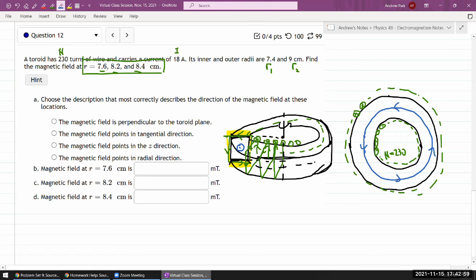That's going to be the direction of magnetic field. Let's see which description fits that direction. Magnetic field is perpendicular to toroid plane—that doesn't sound right. Magnetic field points in tangential direction—yeah that sounds about right, this is what I would describe as tangential. It does not point in one Cartesian direction and it does not point in the radial direction, so yes this is correct. Now what we need is a formula for magnetic field because it's asking magnetic field at this distance. This is where we need to apply Ampere's law.